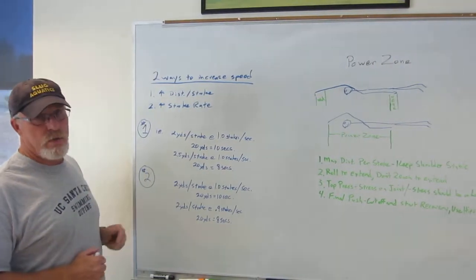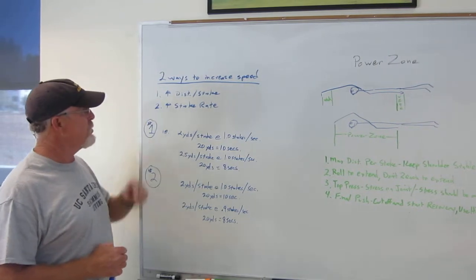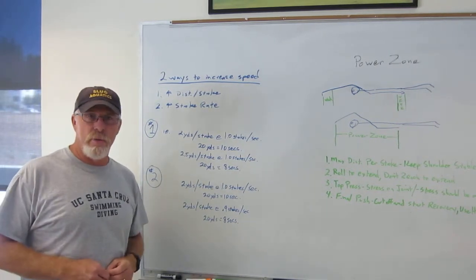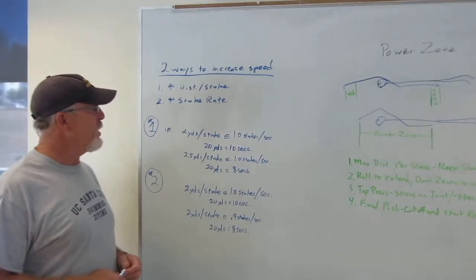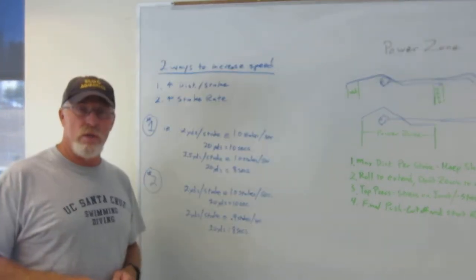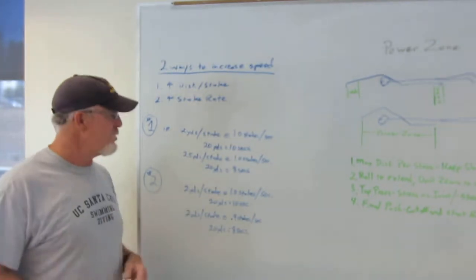There's two ways to increase speed. First way is you increase your distance per stroke. The second way is to increase your stroke rate. And those are really the only two ways to increase speed or combinations of those two.